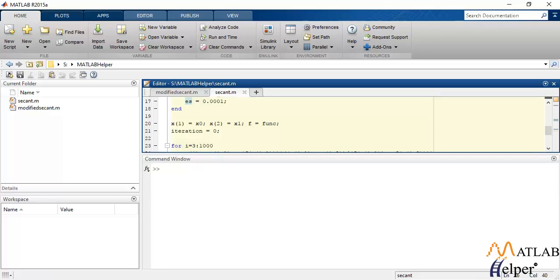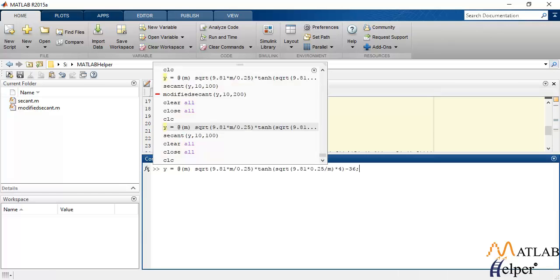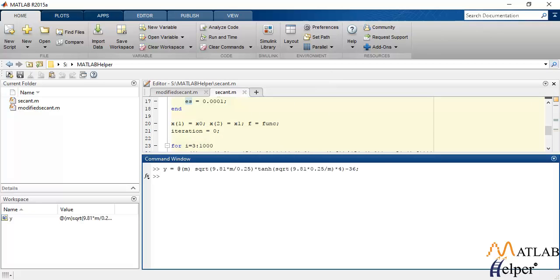Now let's try solving it. I'm going to initialize our equation, this is our equation, and I'm going to call secant function. I'll change the value of the range and I'll just hit enter. So that is the answer that we get using the secant method.